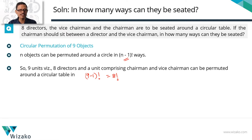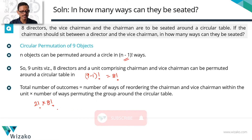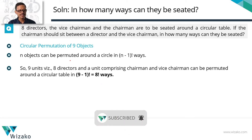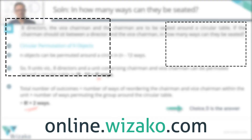The chairman and vice-chairman are also reordered between themselves in 2 factorial ways. So the total number of arrangements is the product of these two: 2! × 8!. The nine objects around a circle give 8! arrangements, and multiplying by the 2! internal arrangements of the chairman-vice-chairman unit gives the final answer of 8! × 2. Choice D is the correct answer.